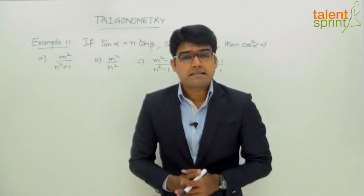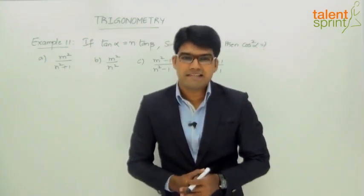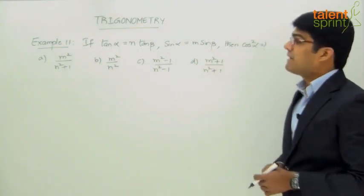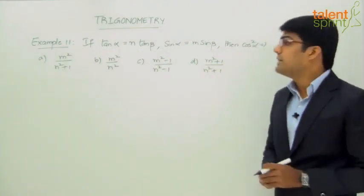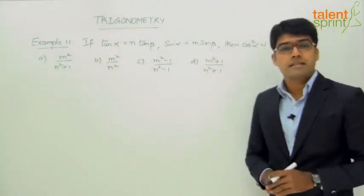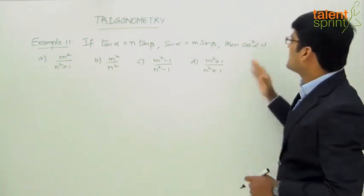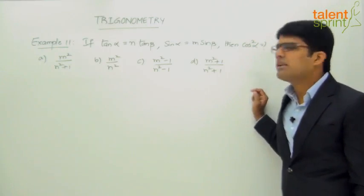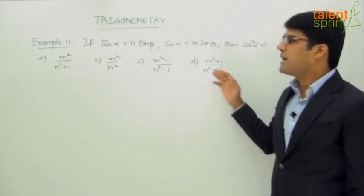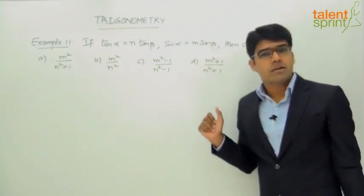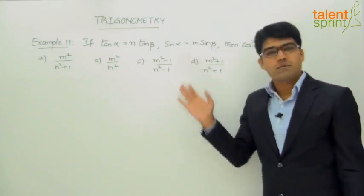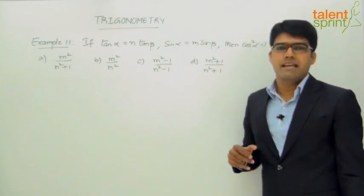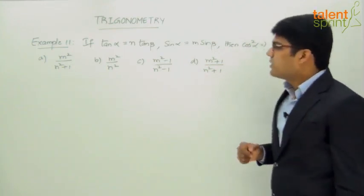Let us now discuss an interesting example from one of the earlier SSC exams — Example number 11. The question is: if tan α equals n tan β and sin α equals m sin β, then cos²α equals what? The answer options are all in terms of m and n: m²/(n²+1), m²/n², (m²-1)/(n²-1), and (m²+1)/(n²+1).